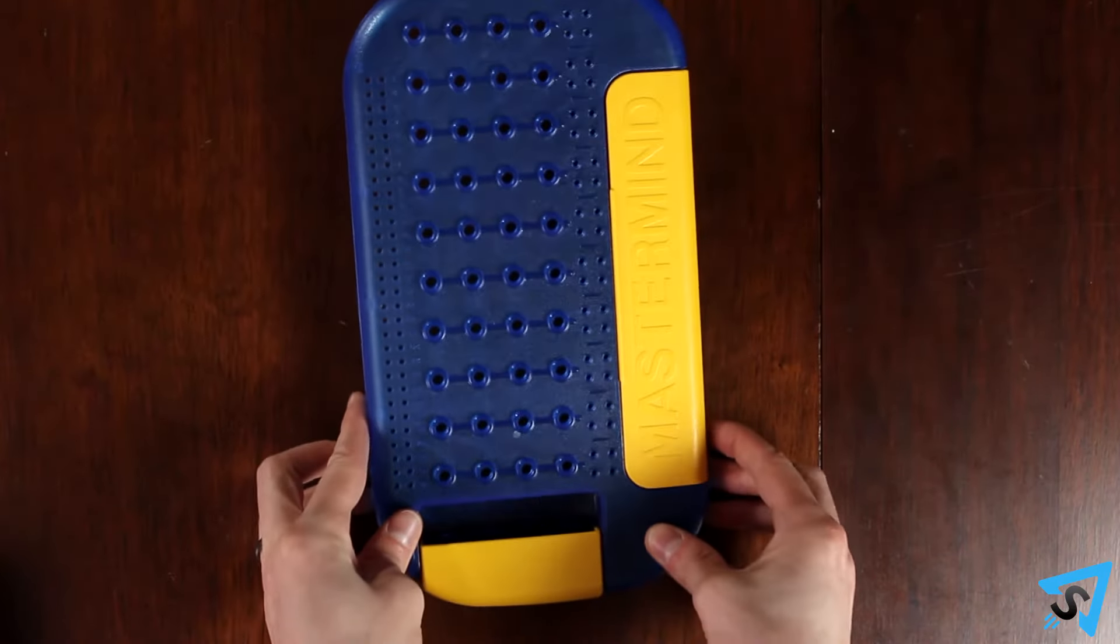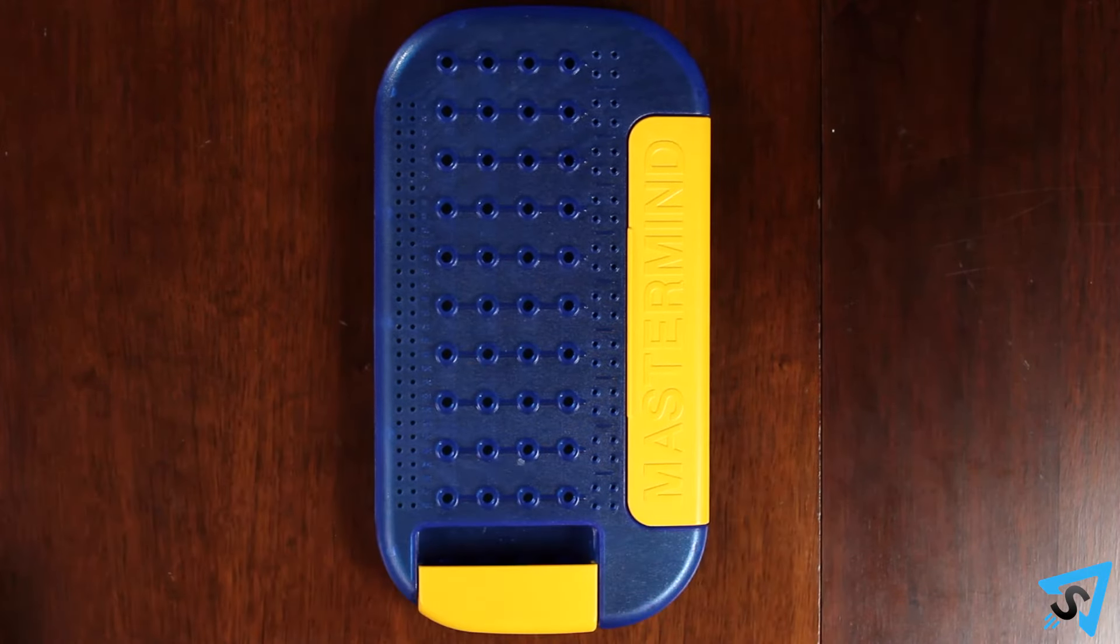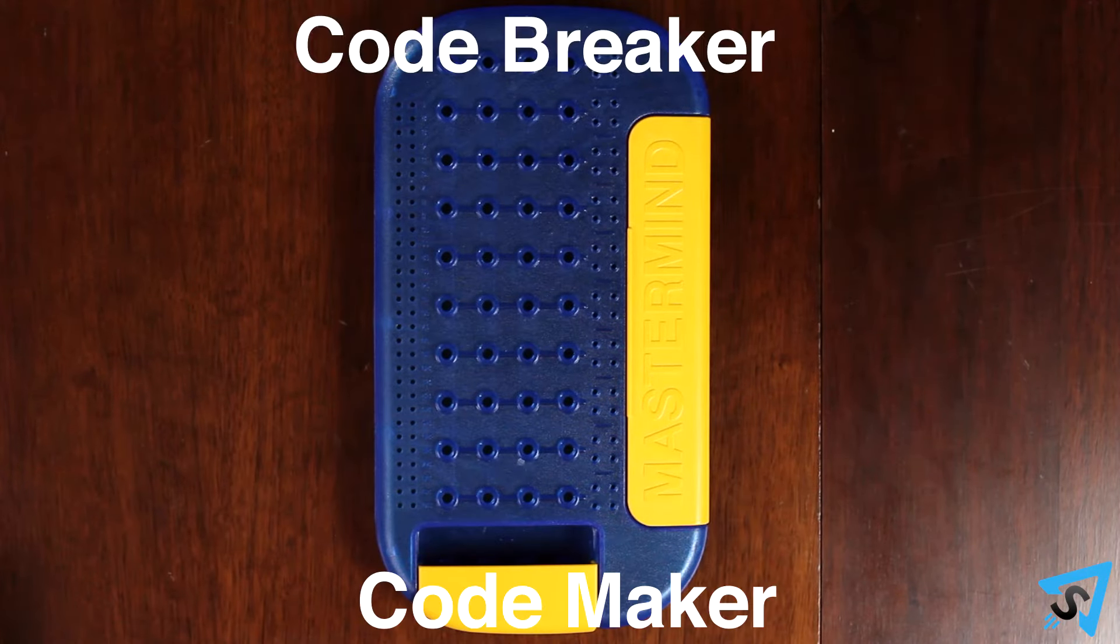Setup. Players sit across from each other with the board in between. One player is the code maker and the other is the code breaker.